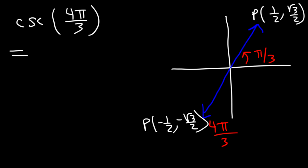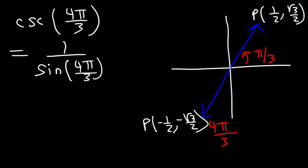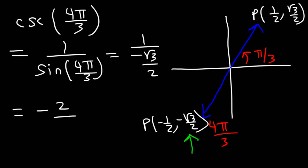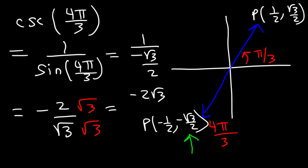Now let's use the reciprocal identity. Cosecant is 1 divided by sine, so we've got to find the value of sine(4π/3). Sine is associated with the y value, so sine(4π/3) = −√3/2. Then 1 divided by (−√3/2) — you just flip the fraction — equals −2/√3. At this point we need to rationalize the denominator, so multiply the top and bottom by √3. The final answer is −2√3/3, since √3 × √3 = √9 = 3.